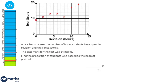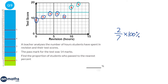The pass mark for the test is shown on the graph and we can see that two students passed the test. That's 2 students out of 7 in total. We want this as a percentage, so we do 2 over 7 times 100, which gives 28.571 recurring percent. Rounded to the nearest percent, that will be 29 percent.